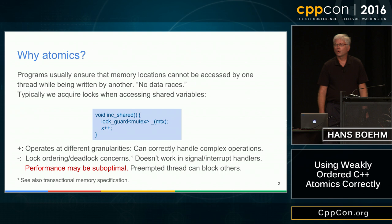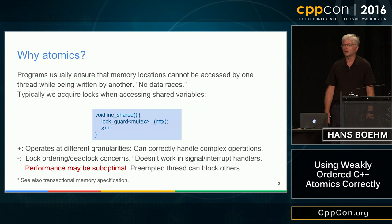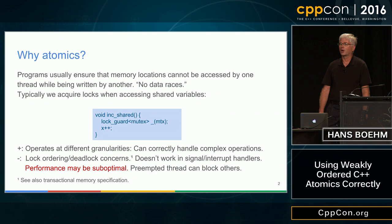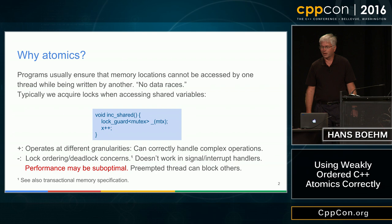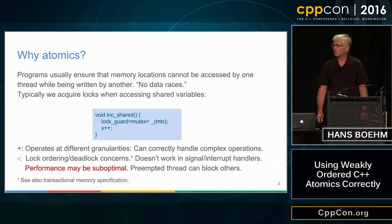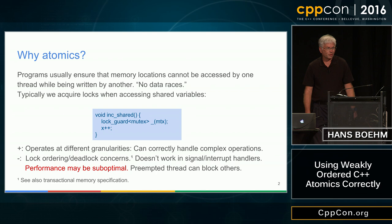Why do we care about atomics at all? The general context is multi-threaded programming in C++. If we're writing a multi-threaded program, the rule is that we have to avoid data races. We should make sure that a memory location is never accessed while another thread is modifying it. That's the default rule, and we typically enforce that using synchronization mechanisms like mutexes.